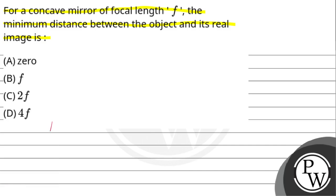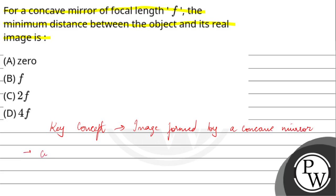So, this question ka key concept hai — the key concept in this question is image formed by a concave mirror. Toh concave mirror kya hoota hai? Concave mirror ek curved mirror hai, jis ka reflecting surface curvy chir ke andar hoota hai — with the reflecting surface inside the curvature.